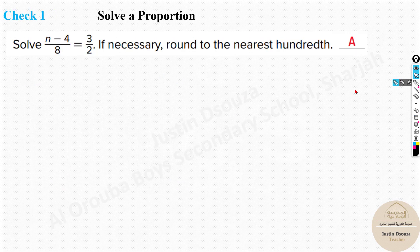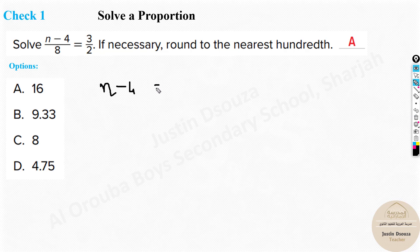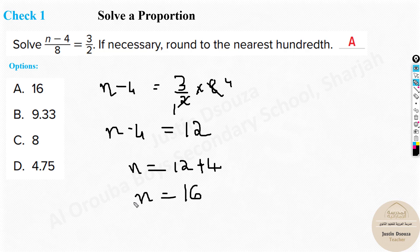Here's another problem — please pause and try it yourself. Let's do the steps: n minus 4 divided by 8. Since n minus 4 are together, leave them and take the 8 to the other side: n minus 4 equals 3 over 2 times 8. Simplifying gives 12, so n minus 4 equals 12. Taking minus 4 to the other side gives n equals 16, which is the final answer.